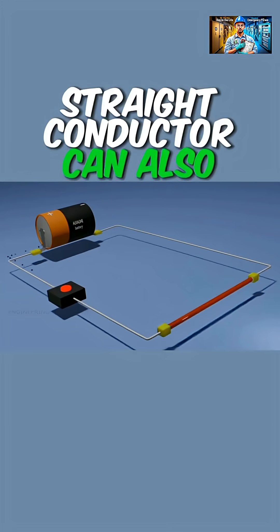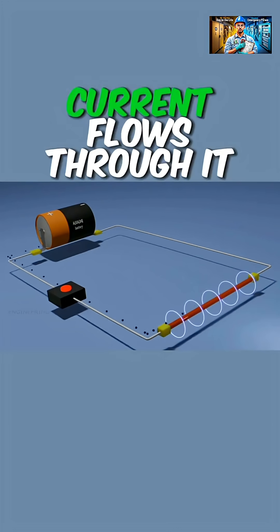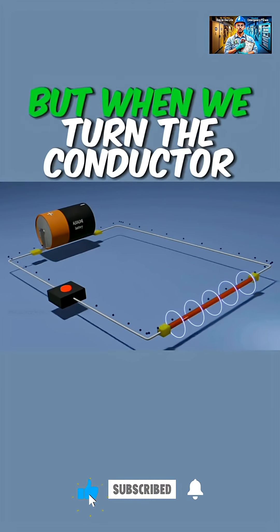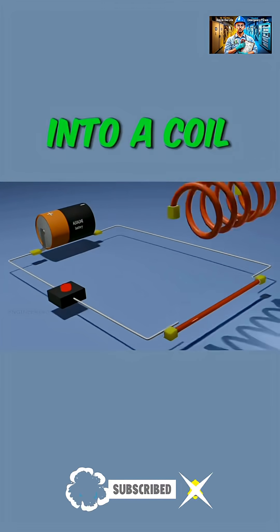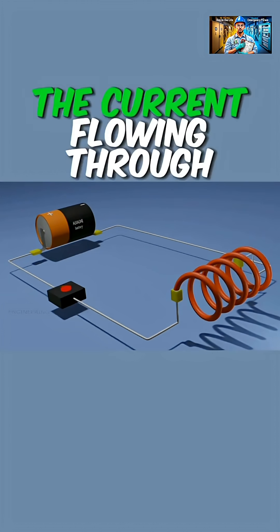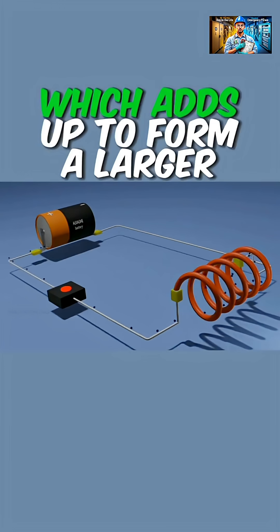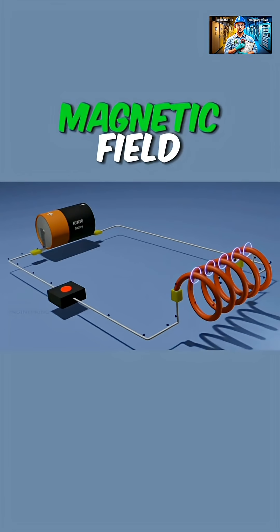A straight conductor can also produce magnetic fields when current flows through it, but the density of these magnetic fields are quite low. But when we turn the conductor into a coil with certain number of turns, the current flowing through each turn creates its own magnetic field, which adds up to form a larger magnetic field.